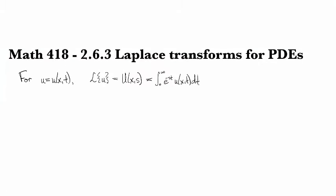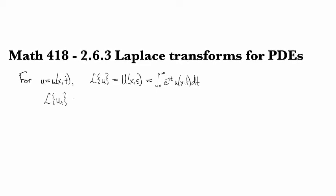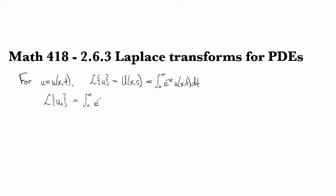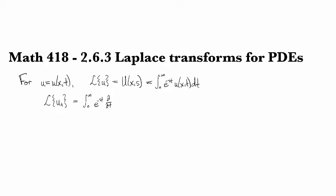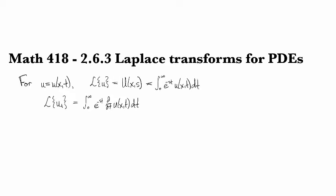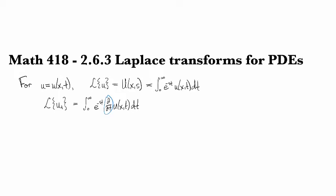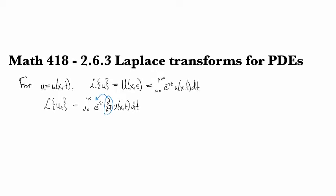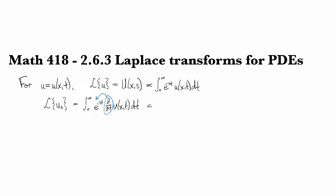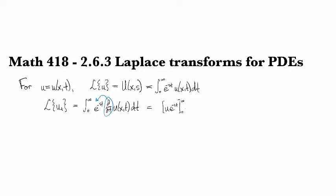So now this means that if we do the Laplace transform of a time derivative, then we have the integral of e to the minus st times d/dt u(x,t) dt, and we can move this derivative to the other argument using integration by parts, and we only have to pay with a boundary term and a minus sign.